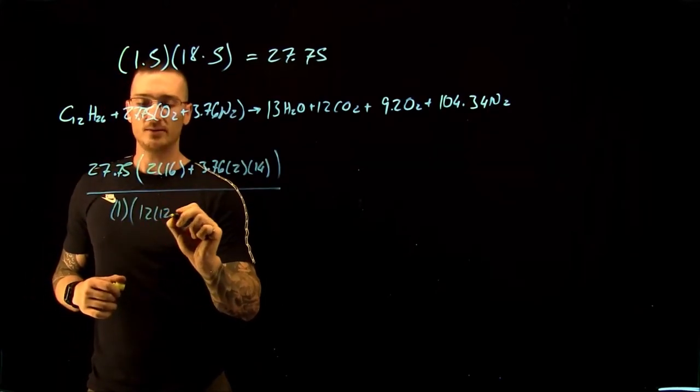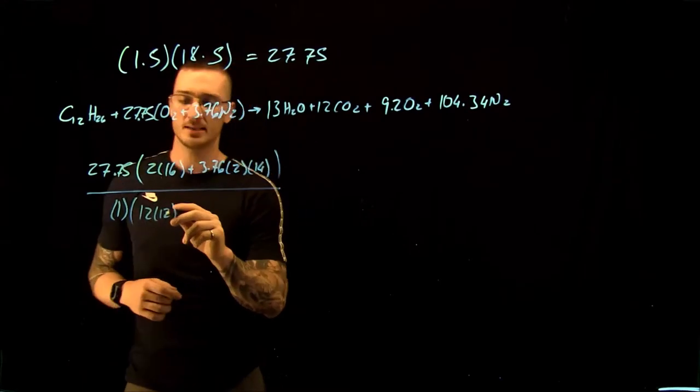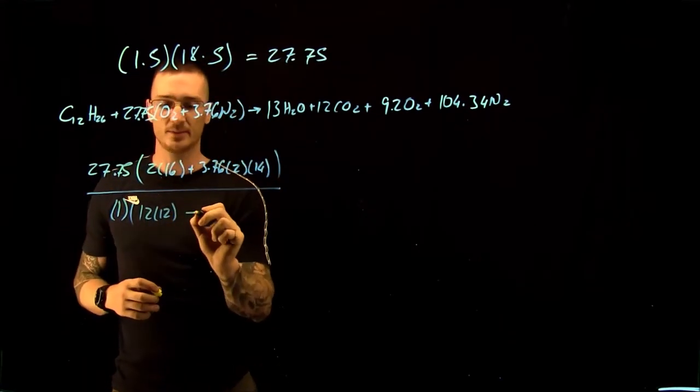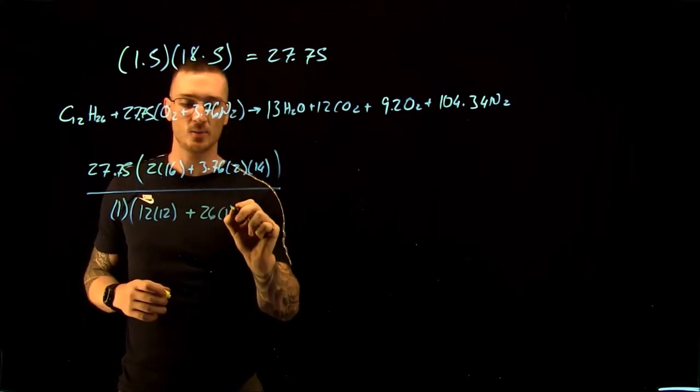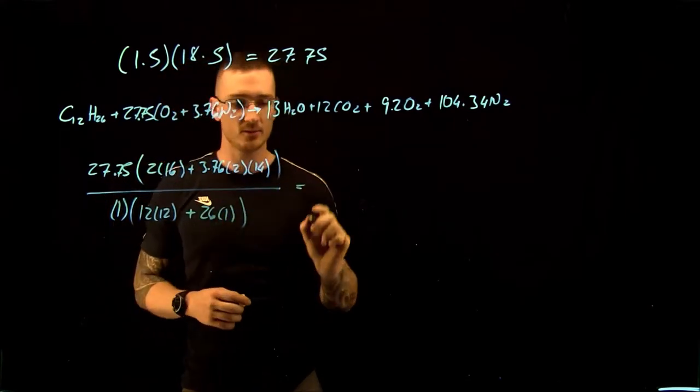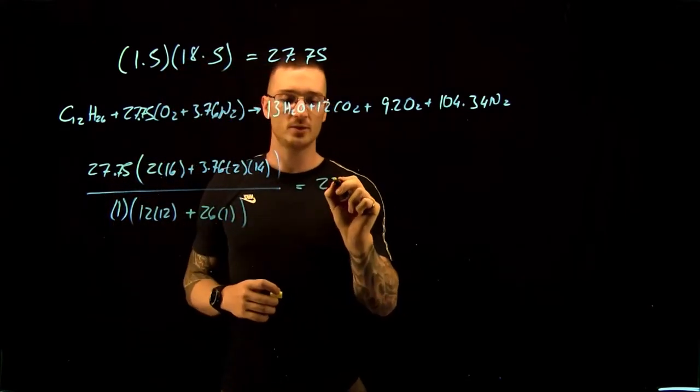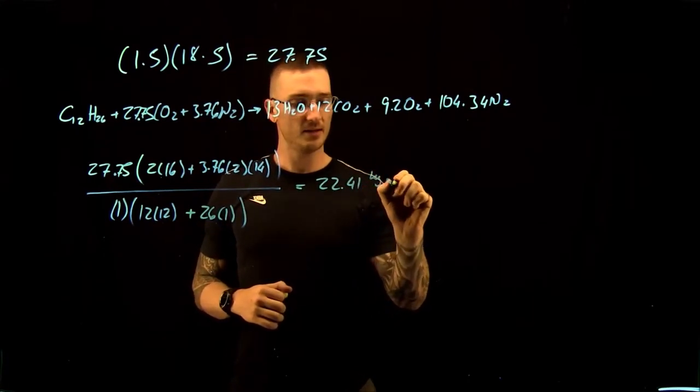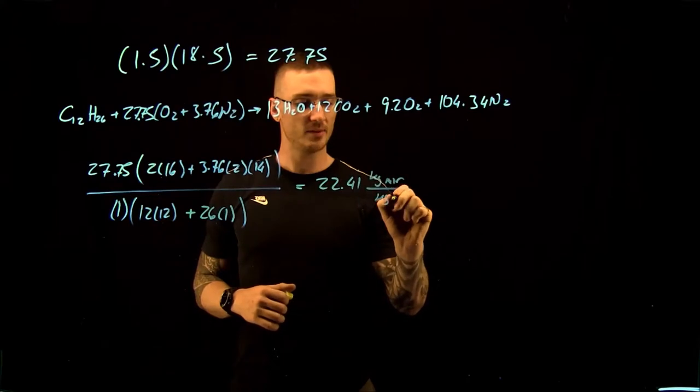That's 12 times 12, the molar mass of carbon times the number of carbon atoms, plus 26 times 1. This is equal to 22.41 kilograms of air per kilogram of fuel.